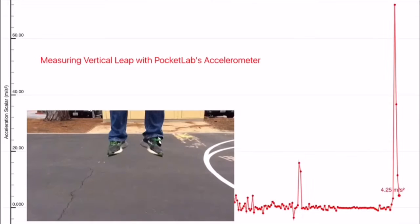To find your vertical, go to PocketLab's Acceleration Scalar Graph, attach a PocketLab to your shoe, and start recording data.